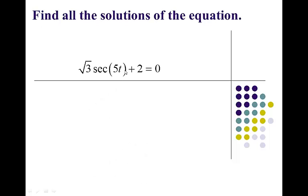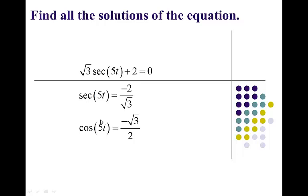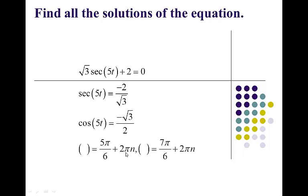Square root of 3 times secant 5t plus 2 equals 0. We need to subtract 2 and divide by square root of 3 to isolate the function. You can't get rid of the 5. I want to turn this into cosine — notice I don't take the reciprocal of the angle, you'll never take the reciprocal of the angle. What angles have a cosine of negative square root of 3 over 2? You should be thinking quadrants 2 and 3, and thinking 30 degree angles. So 5 pi over 6 plus 2 pi n and 7 pi over 6 plus 2 pi n — those are the two angles between 0 and 2 pi that have a cosine of negative square root of 3 over 2.